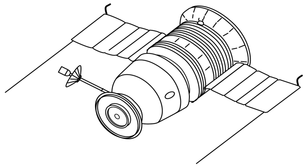Zond 5 launched on September 14 and became the first spacecraft to circle the Moon and return to land on Earth. On September 18, the spacecraft flew around the Moon. The closest distance was 1,950 km. High-quality photographs of the Earth were taken at a distance of 90,000 km.